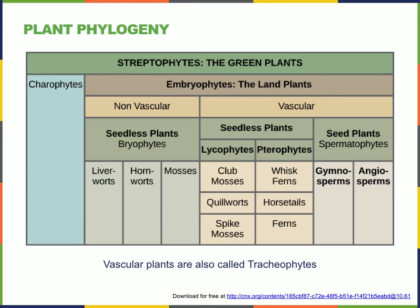Vascular plants are divided into seedless plants — club mosses, spikemosses, horsetails, and ferns — which are more advanced. These have vascular tissues and can grow tall, but they don't produce seeds. Then we have two groups of seed plants: the gymnosperms and the angiosperms.